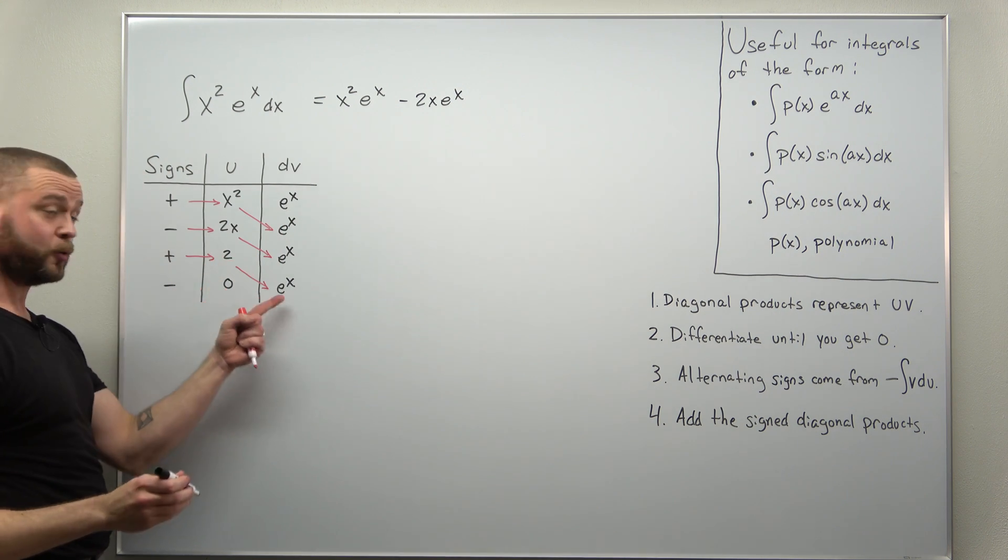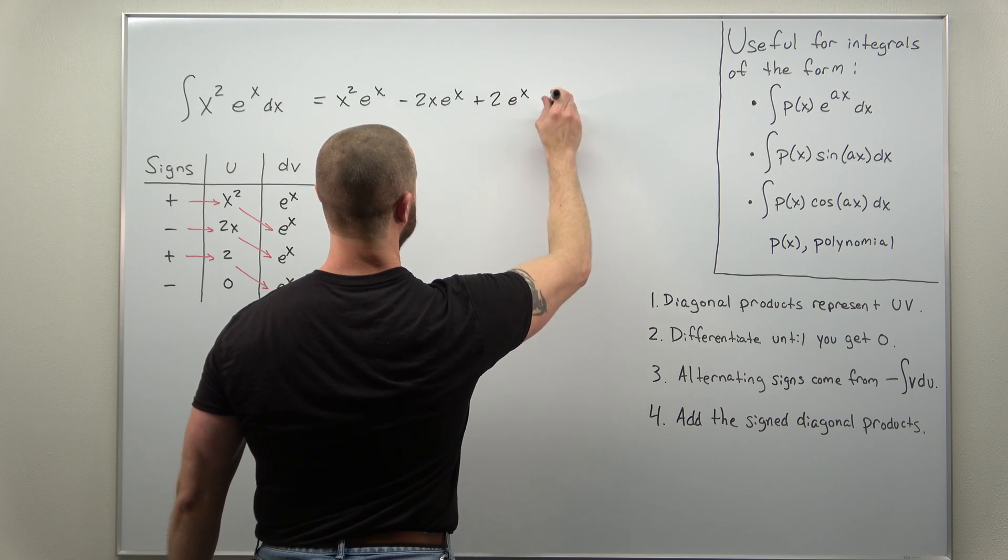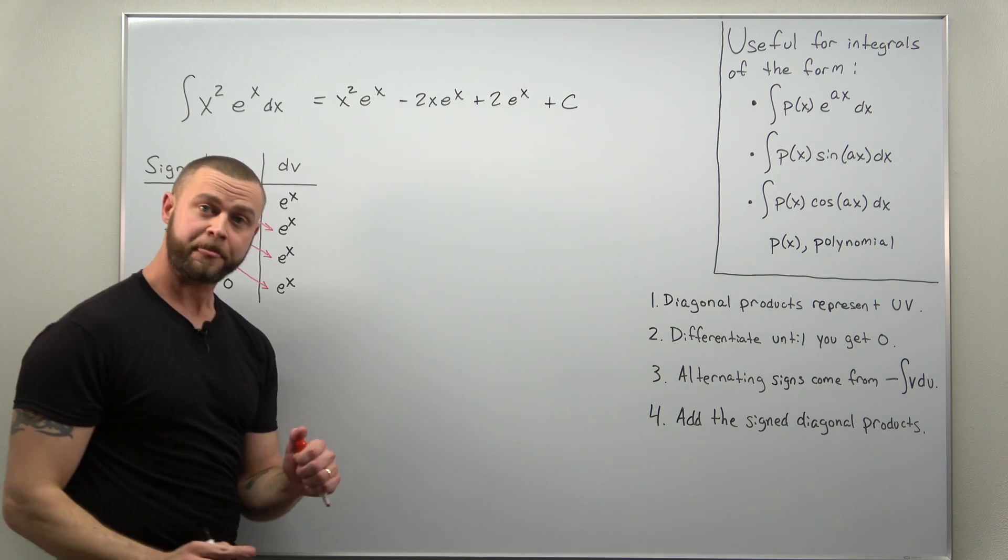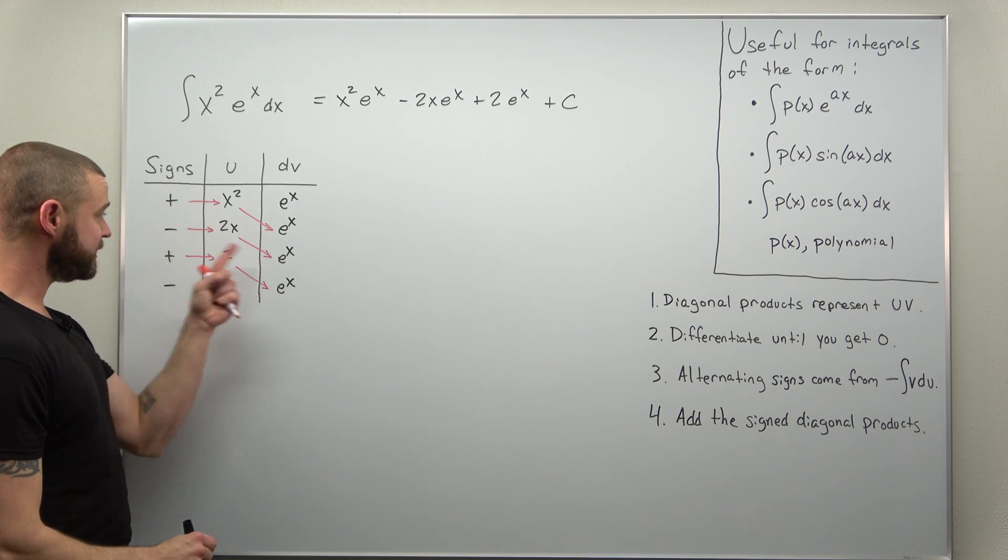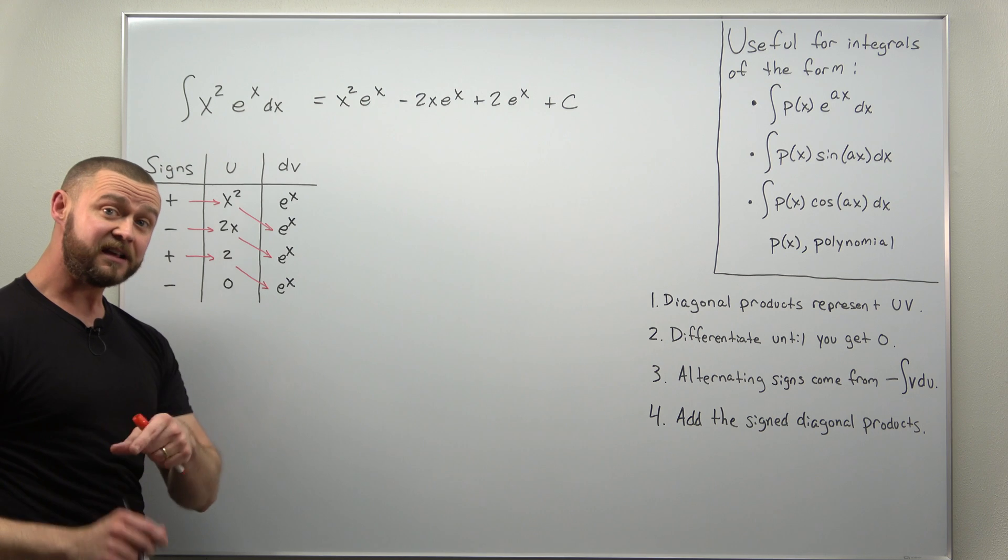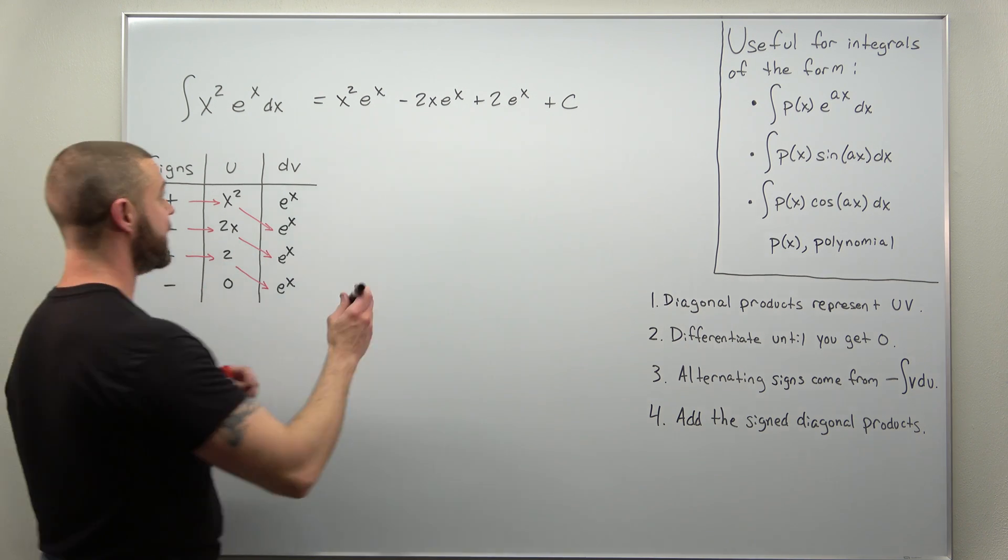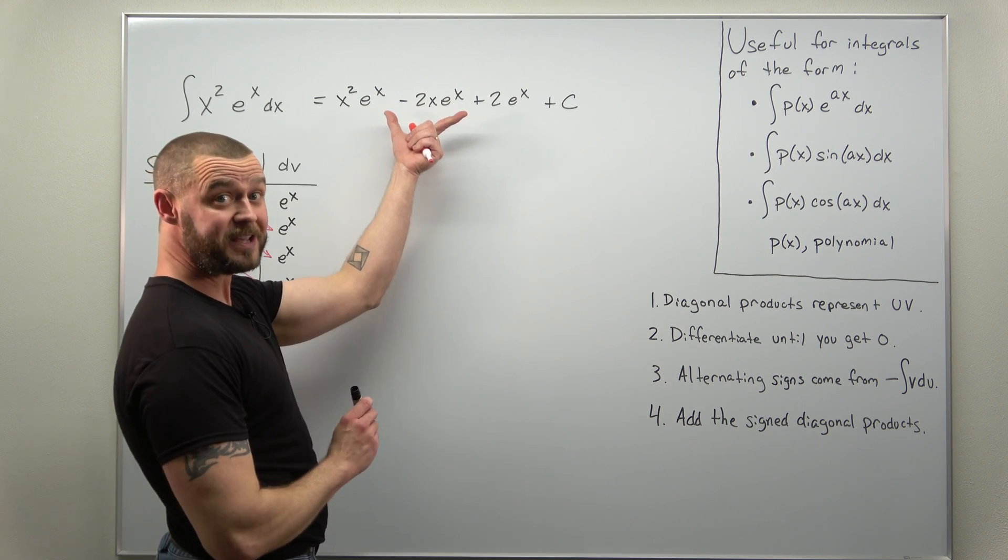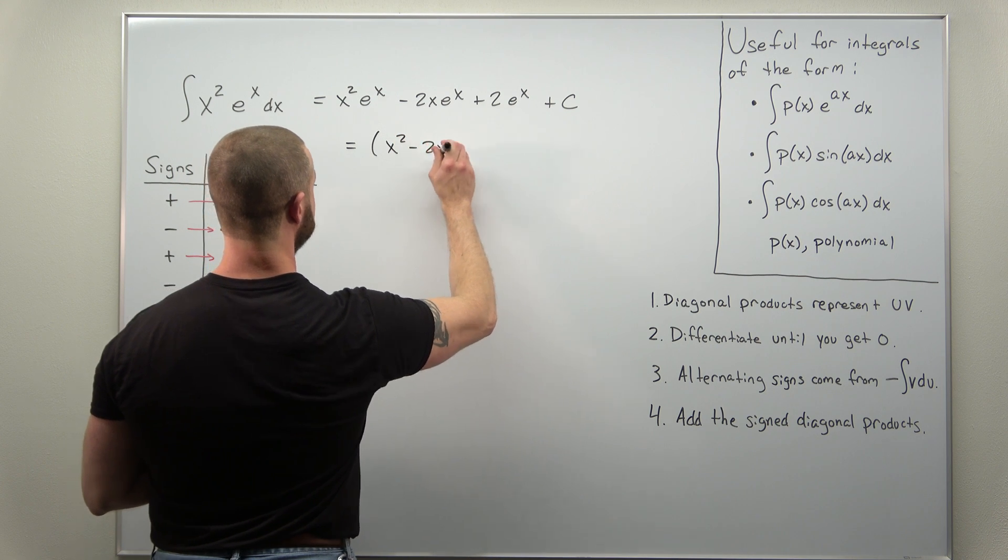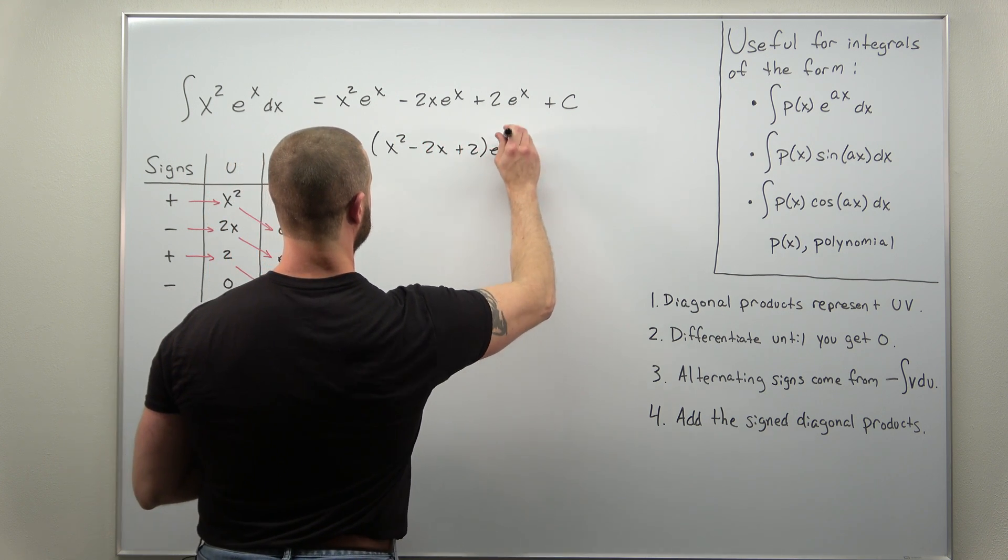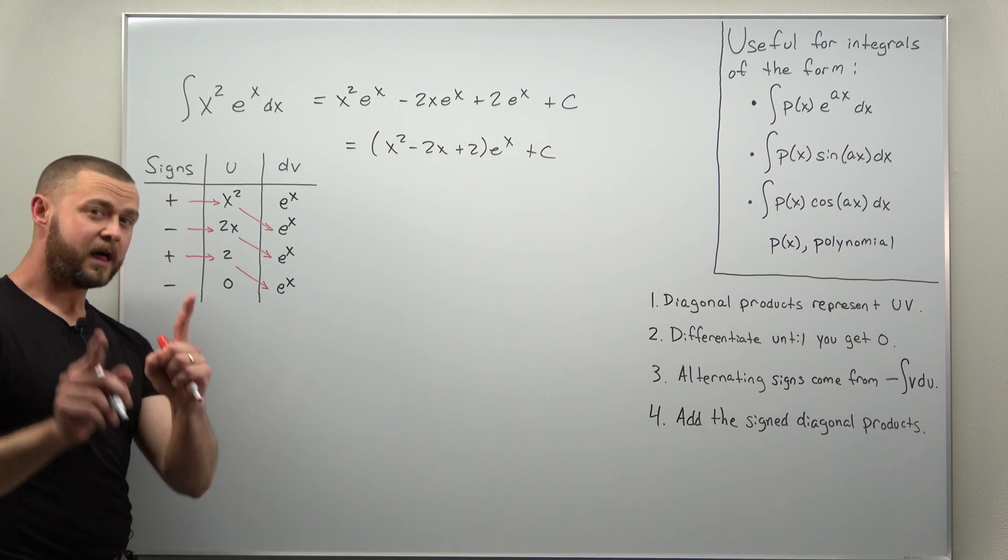With practice, you can simplify this as you go. Notice every diagonal product contains an e to the x in it, so you could have already kept that in mind and factored that out. You can factor e to the x out here and write your answer as x squared minus 2x plus 2, times e to the x plus c. But again, with practice you can do that as you go.